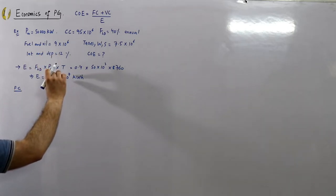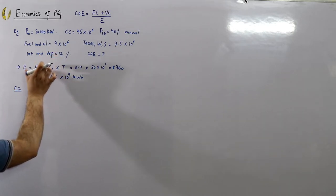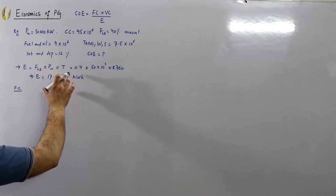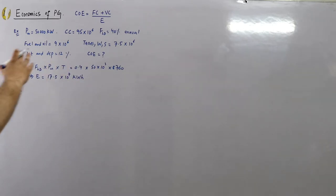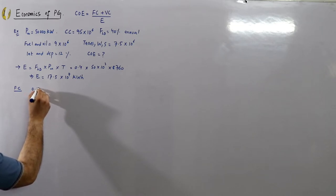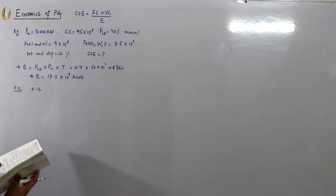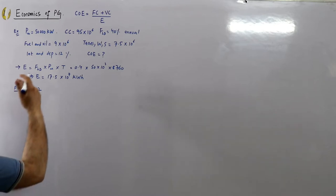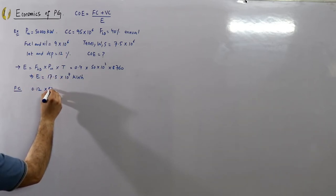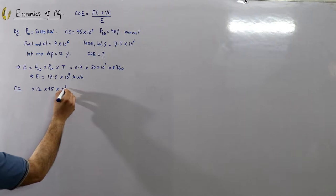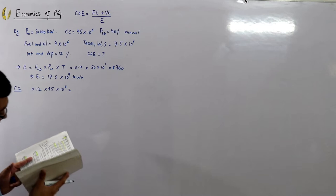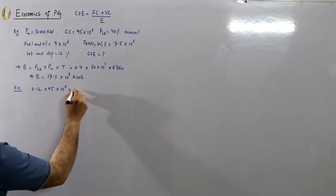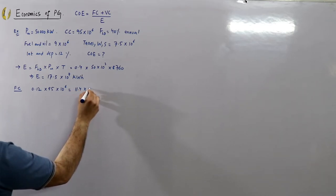Now the fixed charges — that includes only interest and depreciation here. So: 0.12 × 95 × 10⁶ = 11.4 × 10⁶ rupees.